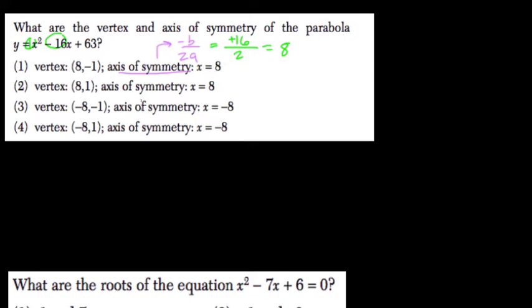So the axis of symmetry is x equals 8, not negative 8. So these 2 cancel out.